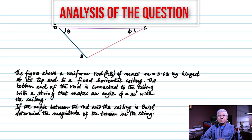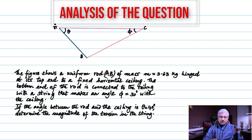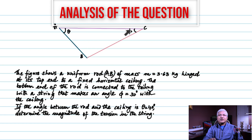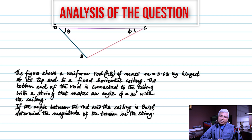Now you should try to do this on your own. The length of the rod is not given. The only quantities given are the mass of the rod, which is 3.63 kilograms, and two angles: 30 degrees and 40 degrees. We need to find the tension in the string, which acts upward.